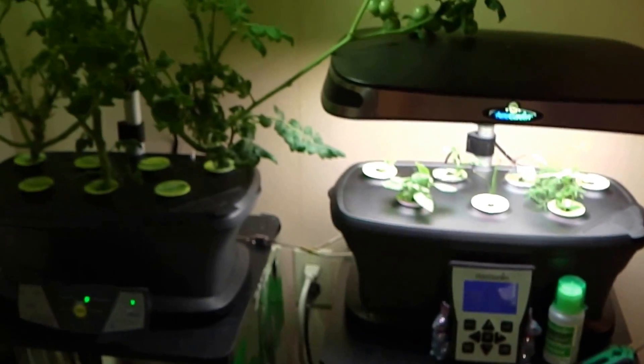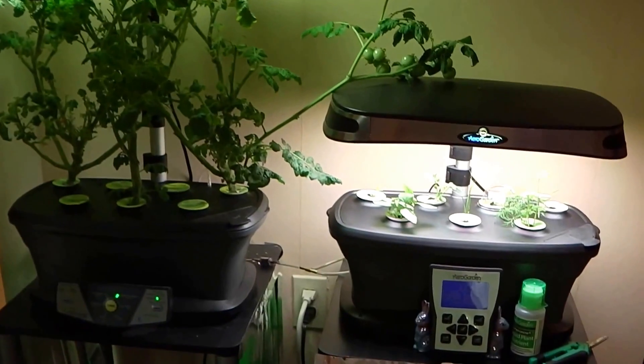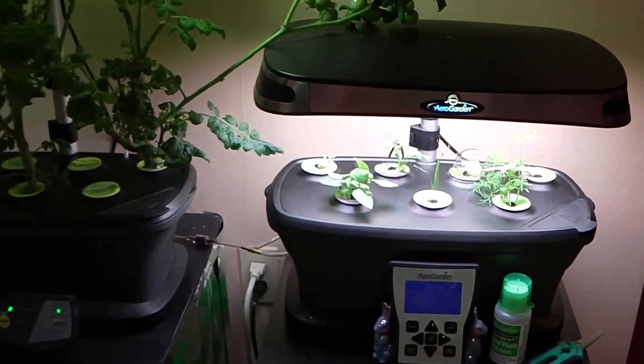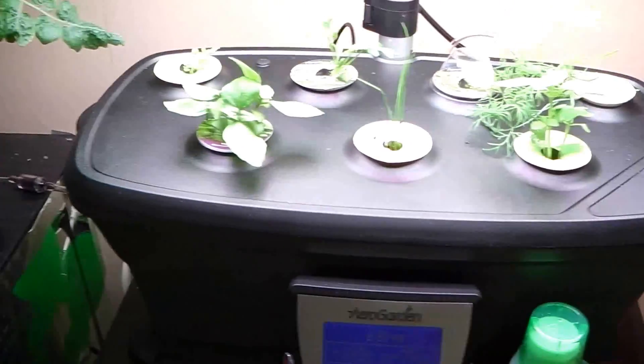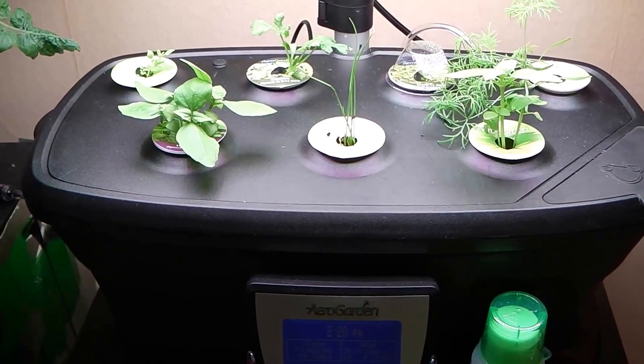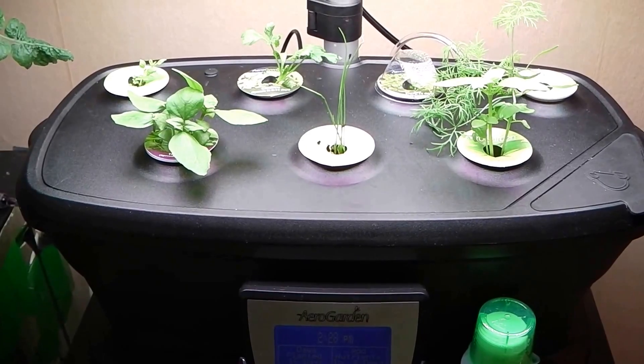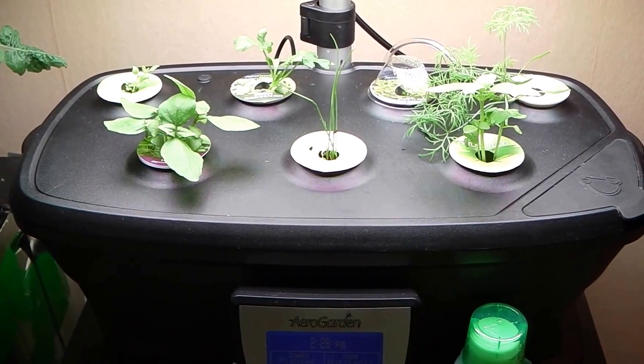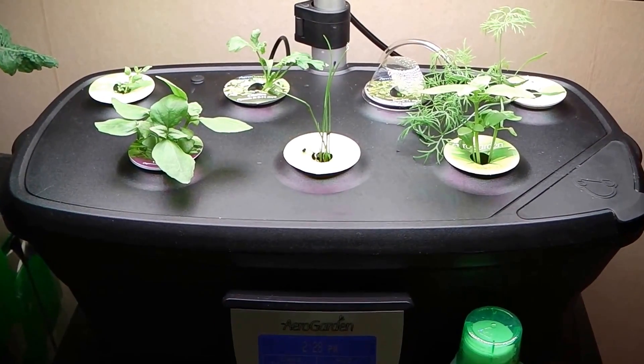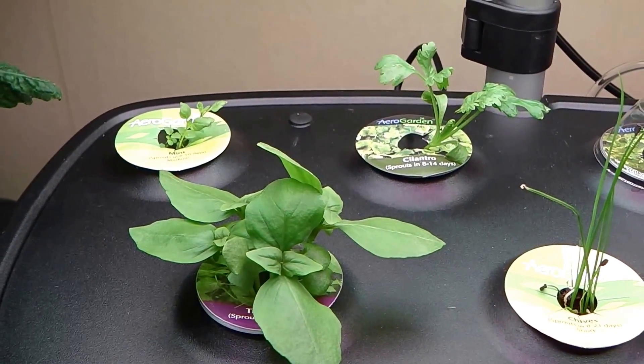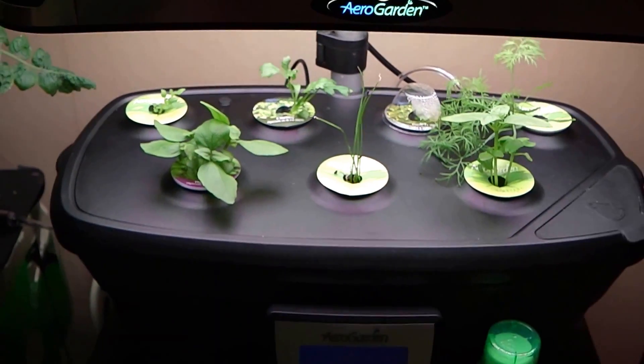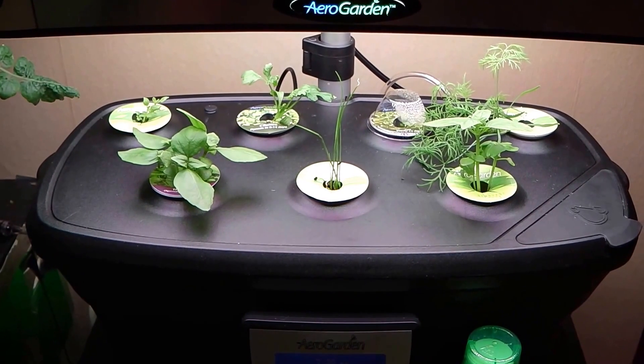So there you have it. That is how to improve the yields of your AeroGarden. And I know for sure it works on the AeroGarden Ultra and the AeroGarden Extra. The AeroGarden 3 already has an air stone so you wouldn't need to do that on this. And I would guess that some of the other units have these access holes on them but I cannot be certain of that. So thanks for watching and if you enjoy this be sure to subscribe.